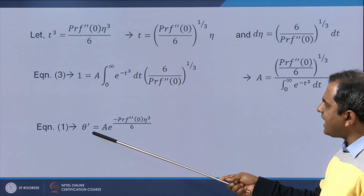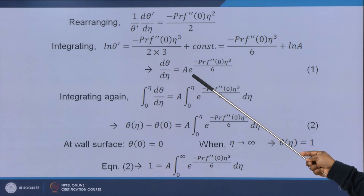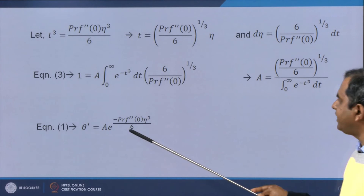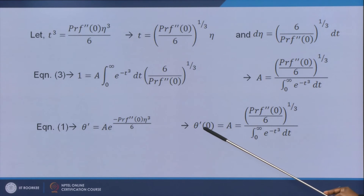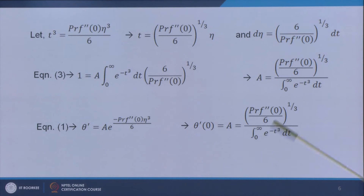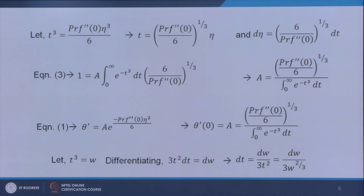We also know θ'(0) from the expression θ' = a·e^(−Pr·f''·η³/6). At the wall, η = 0, so the exponential term equals 1, giving θ'(0) = a. This wall gradient θ'(0) helps us find the heat flux. Substituting a, we get θ'(0) = (Pr·f''/6)^(1/3) divided by ∫₀^∞ e^(−t³) dt, where the integral needs to be evaluated.